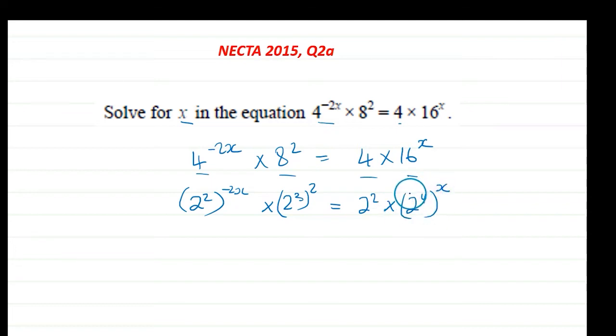Right, let's try and tidy this up. For the first term, we need to multiply the powers. So 2 times -2x will give you 2^(-4x).